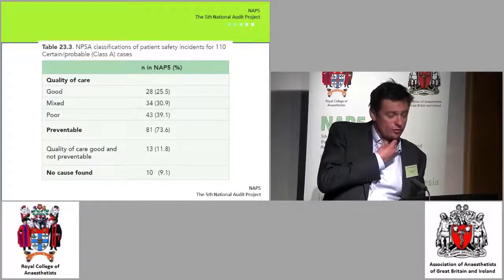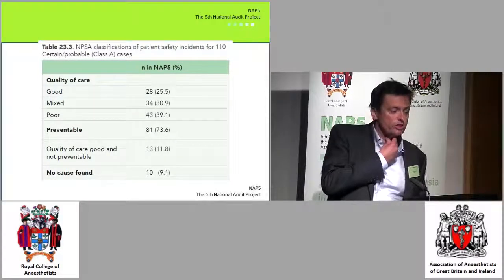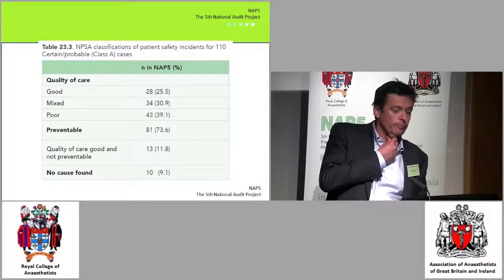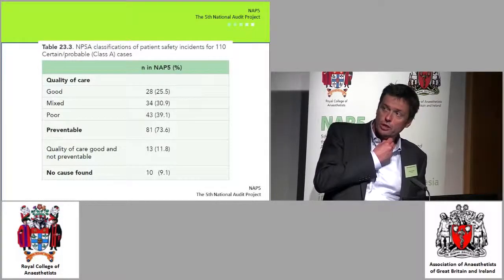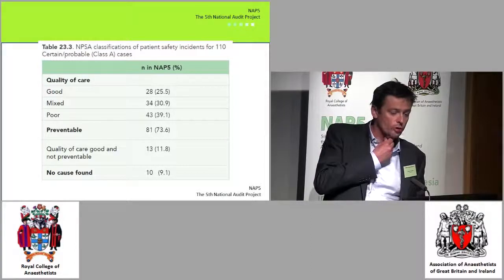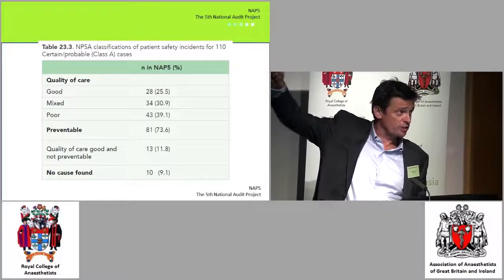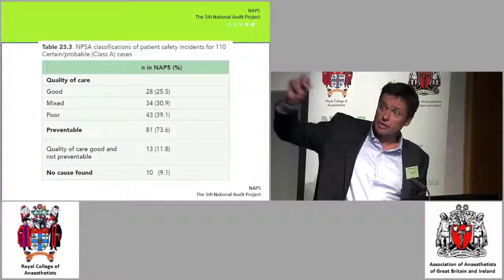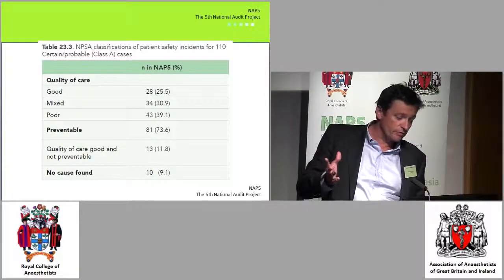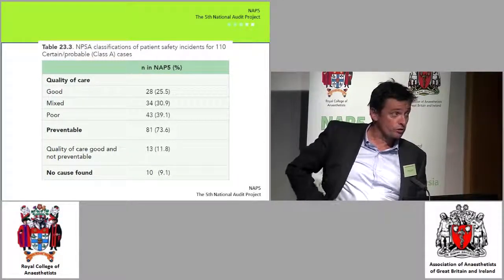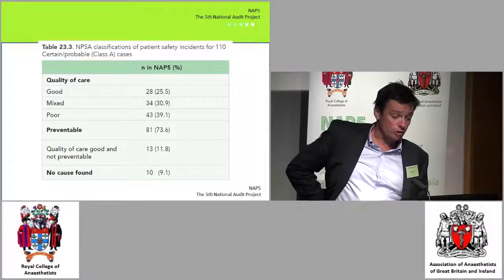What about quality of care? Did we judge that anaesthetists had done a good job, a mixed job, or a poor job? Quite a lot of the time we felt they'd either done a mixed job or a poor job — there were areas for improvement. In 70% of the certain and probable cases — the 110 cases with the best data — roughly three quarters were preventable, and good care prior to awareness was found in only a quarter of cases.